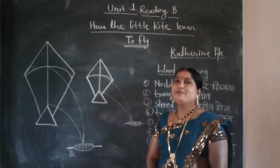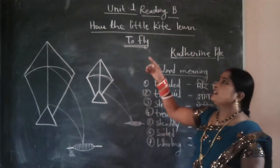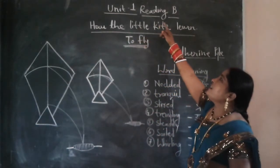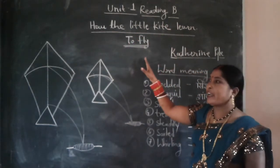Hello, good afternoon. My name is Jyothi Narvi and today we will read Class Unit 1, Reading B. How the Little Kite Learn to Fly.